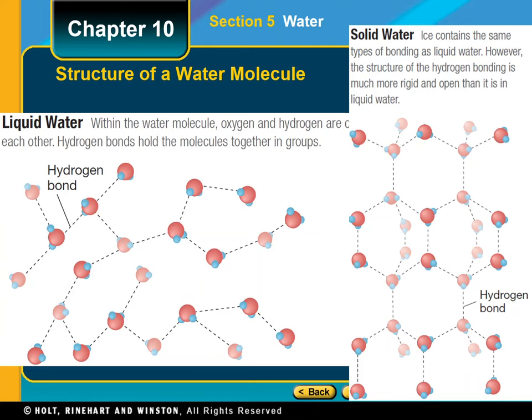The molecules in solid or liquid water are linked by hydrogen bonding. The number of linked molecules decreases with increasing temperature, because increases in kinetic energy make hydrogen bond formation difficult. Nevertheless, there are usually from four to eight molecules per group in liquid water, as demonstrated on the right of your screen.